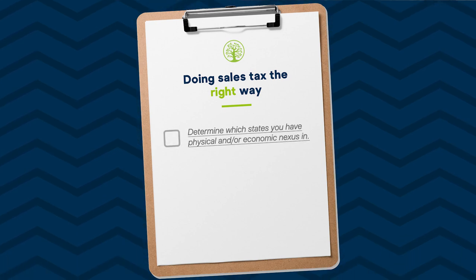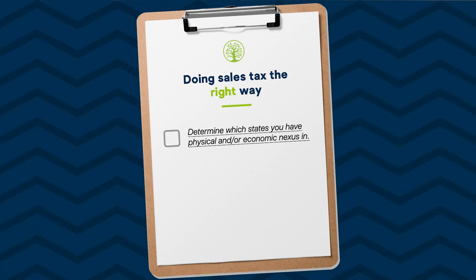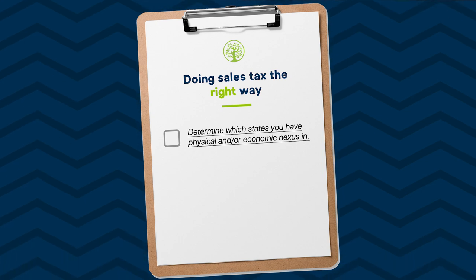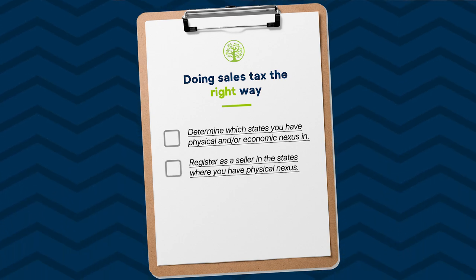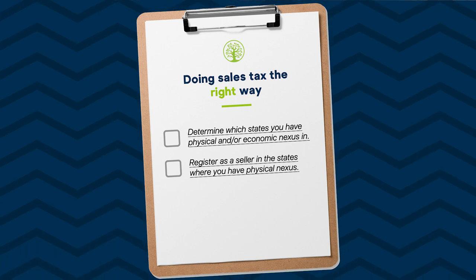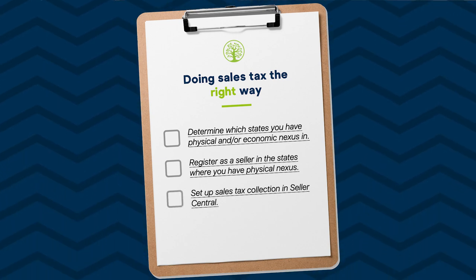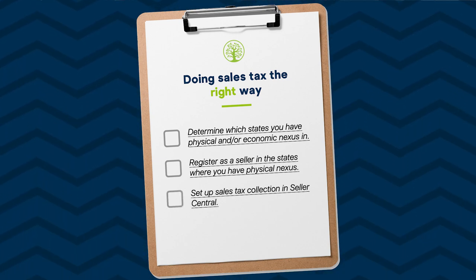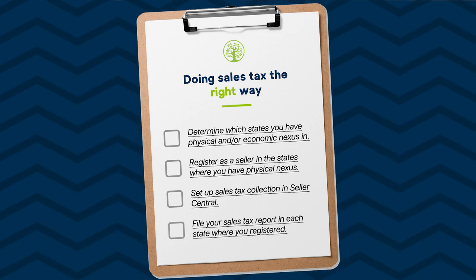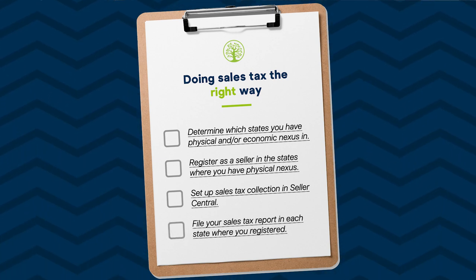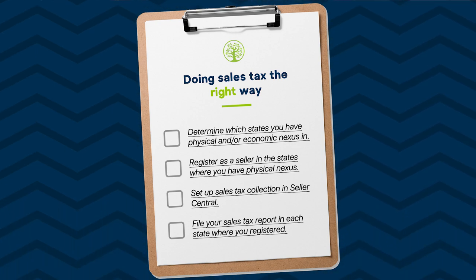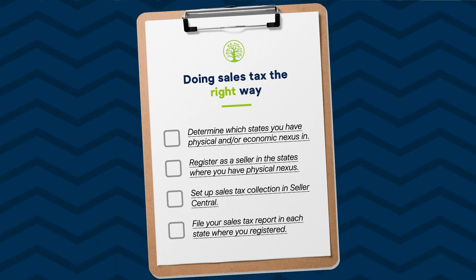For the states where Amazon does not remit the tax for you, you must submit your payment when you file. There are typically only a handful of states you need to register with, and they provide step-by-step instructions for how to do this online. Here's a checklist to make sure you are doing sales tax the right way. Step one: determine which states you have physical and/or economic nexus in. Step two: register as a seller in the states where you have physical nexus. Step three: set up sales tax collection in Seller Central. Step four: file your sales tax report in each state where you registered at the frequency they require — whether monthly, quarterly, or sometimes annually.